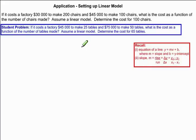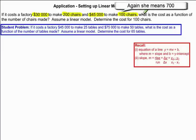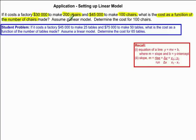Let's start by highlighting some important information in the question. We have a cost of $30,000 to make 200 chairs, and then it costs $45,000 to make 100 chairs. So we want to determine the cost as a function of the number of chairs. And we're going to assume a linear model. Once this is completed, then we're going to determine the cost for 100 chairs.